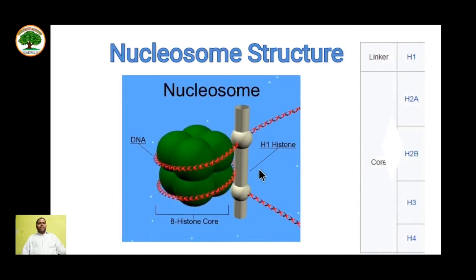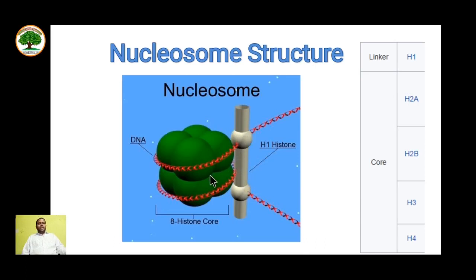This is exactly what the histone nucleosome structure looks like. There are five types of histone proteins. The histone octamer is formed by four proteins — H2A, H2B, H3, and H4 — which are dimeric in nature. The H1 protein acts as a clip, wrapping the DNA around the nucleosome and forming the linker DNA connected to the next histone. This arrangement is repeated to form a solenoid structure of DNA.